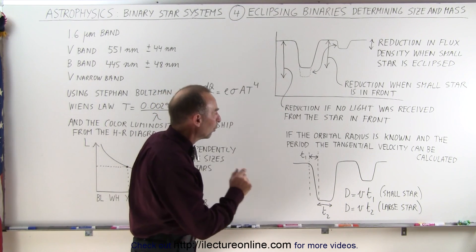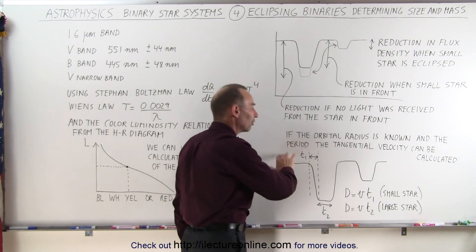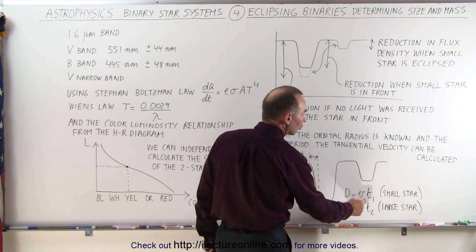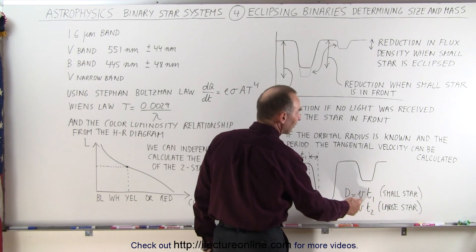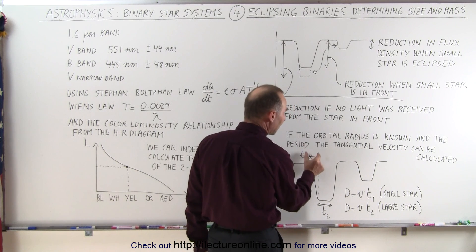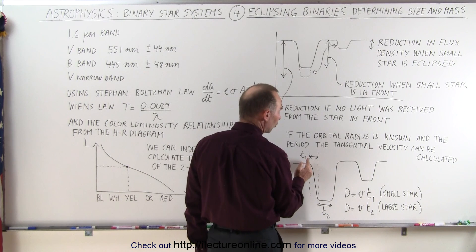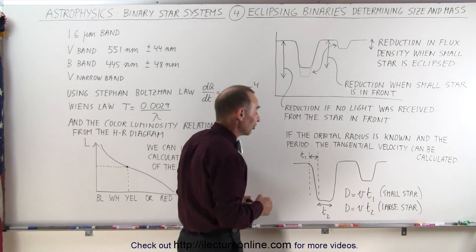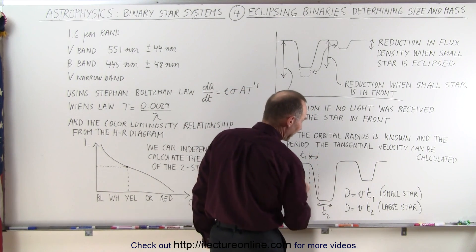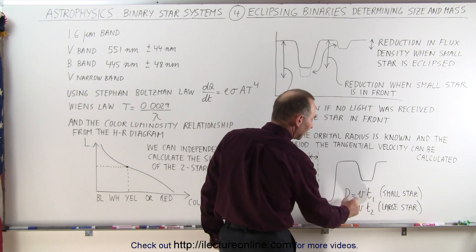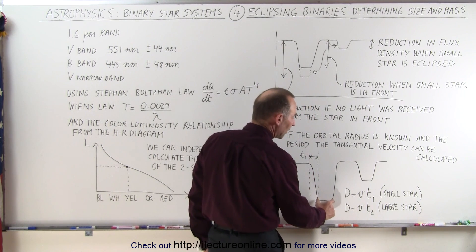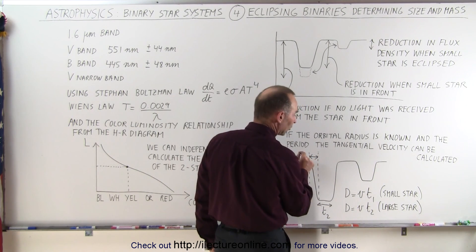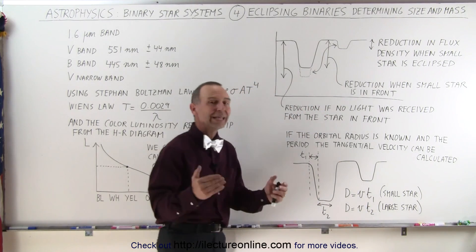Another thing we can do is figure out, once we know the orbital radius and the period — the period is of course easy to calculate — if we can measure the orbital radius, we can determine how fast the small star moves around the large star. We can find the tangential velocity of its orbit, and then determine the diameter of the small star by measuring how long it takes for the star to disappear completely behind the large star, or in front of it. We multiply that time by the velocity to get the diameter of the small star. Similarly, the time the small star spends hidden by the large star, multiplied by the tangential velocity, gives us the diameter of the large star.